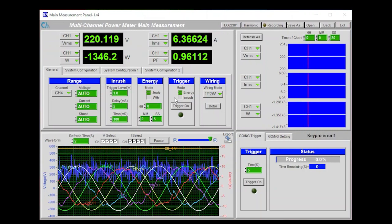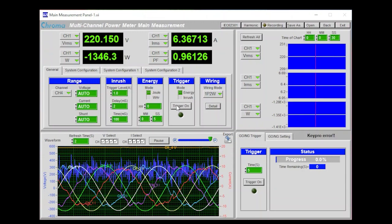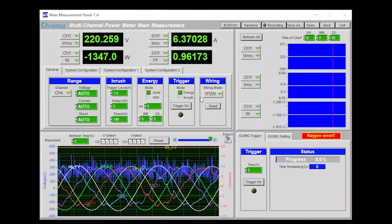Once we have the measurement parameters of inrush current and energy set, we can select the mode for measuring inrush current or energy. To start the measurement, simply click on the trigger on button, and to stop the measurement, click on the trigger off.